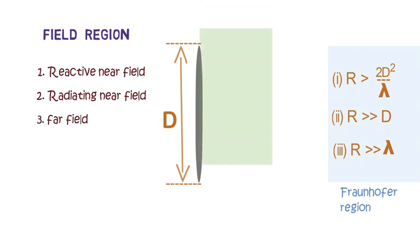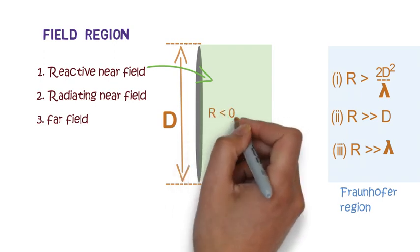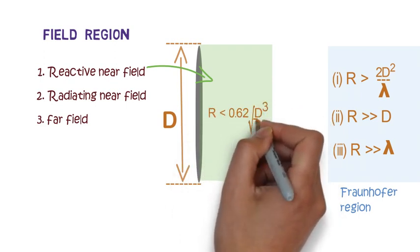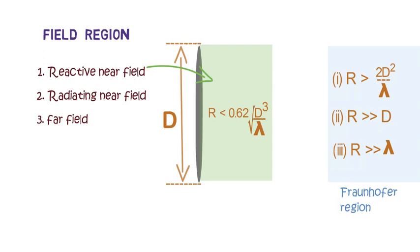In the immediate vicinity of antenna we have reactive near field. In this region the fields are predominantly reactive, that means the electric and magnetic fields are out of phase by 90 degrees to each other. The boundary of reactive field is commonly given as R less than 0.62√(D³/λ).